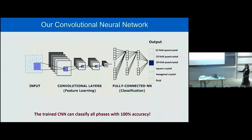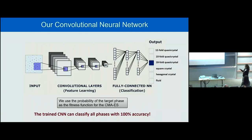We use all parameters that can discriminate different phases by taking the diffraction patterns and feeding them into a convolutional neural network that tells us the probability that a configuration belongs to one of these phases. We train this convolutional neural network by running simulations of six different phases — we exactly know what these phases are, can run MC simulations, calculate the diffraction patterns, and train the CNN on those training sets. In the end, the neural network can classify all these phases with 100% accuracy. Because we get a probability that it belongs to one of these phases, we can use it as a fitness function for an evolutionary strategy.